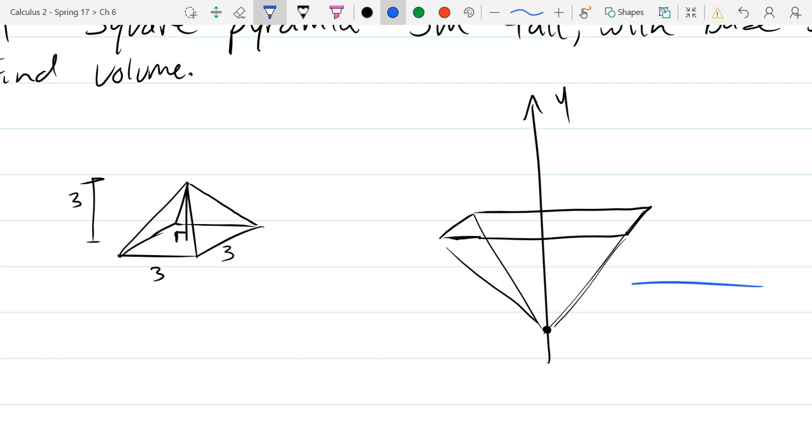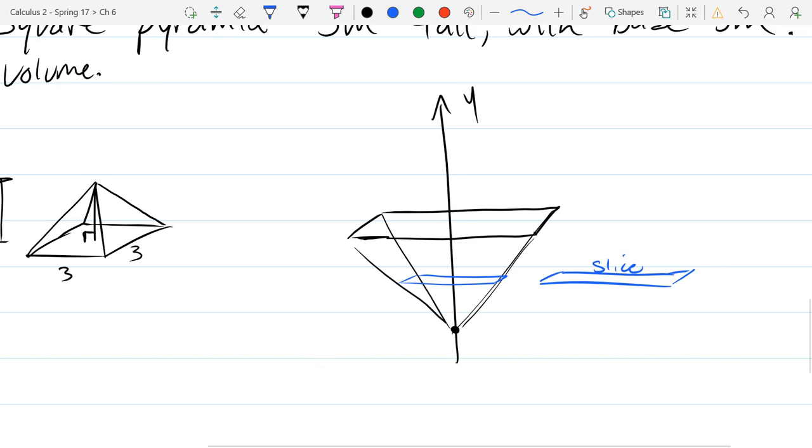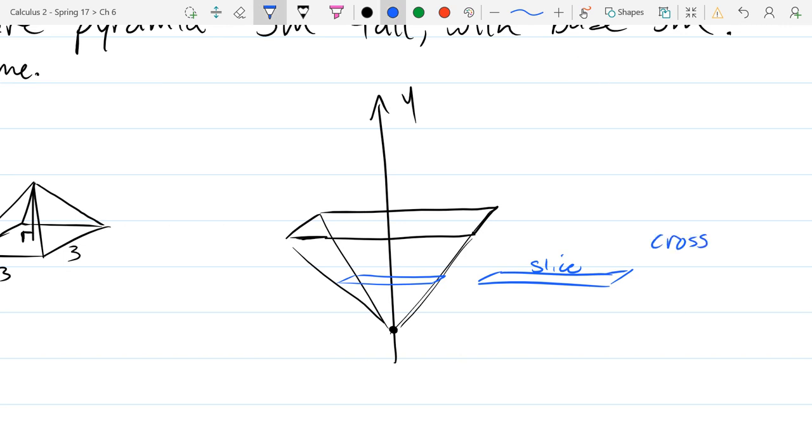If we slice perpendicular to the y-axis, we're going to make horizontal cuts the way I drew it. If we slice this way, what shape do we get? We're going to get squares if we cut like this. And squares are the easiest way to compute the area, because that's just side times side.